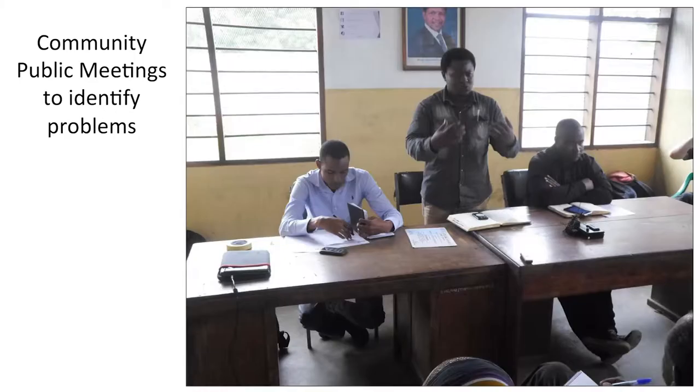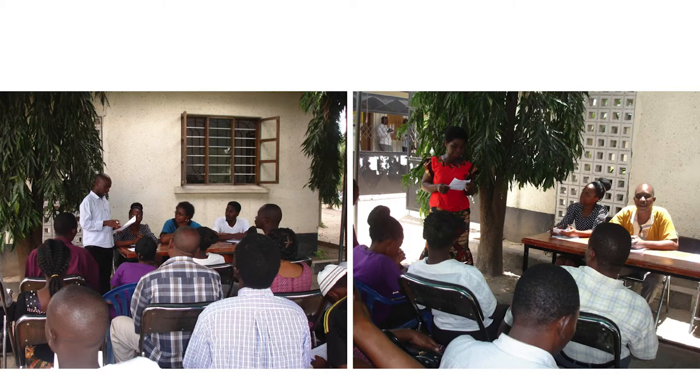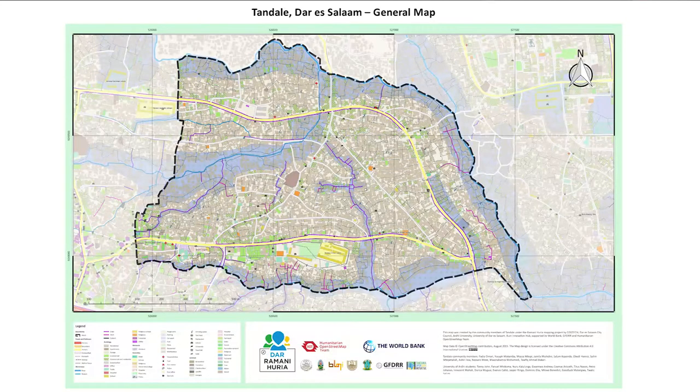What do we do? We call public meetings. We identify the problem together — we sit, we discuss. We put together a layout for how we can solve our problems, because it repeats year after year. We came up with a solution with the people of Ramani Huria. As you see, the map is so precise and very understandable. The faint blue areas show which zones are wet.